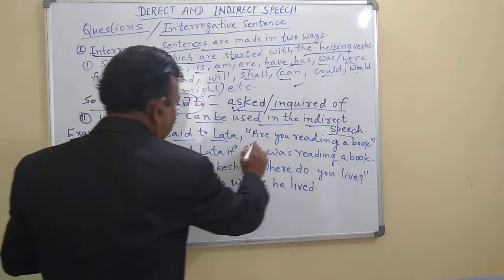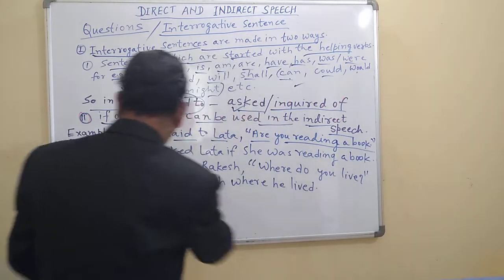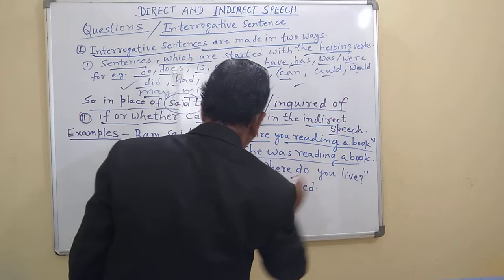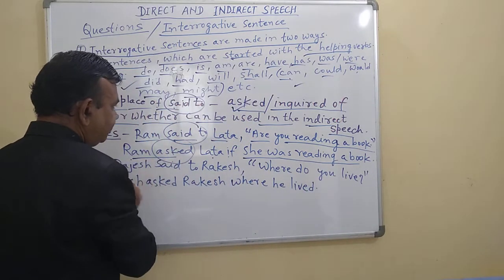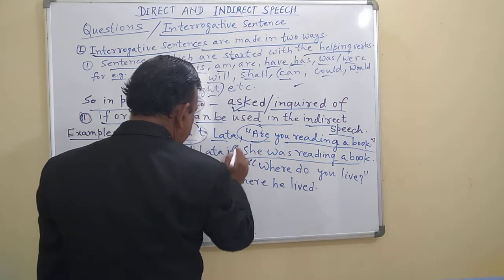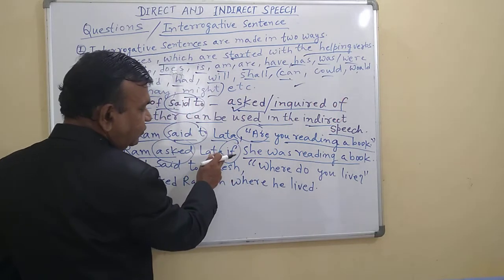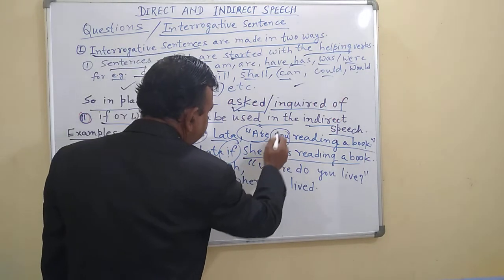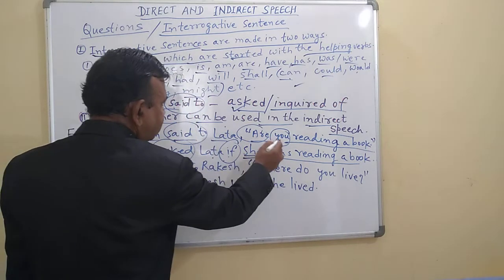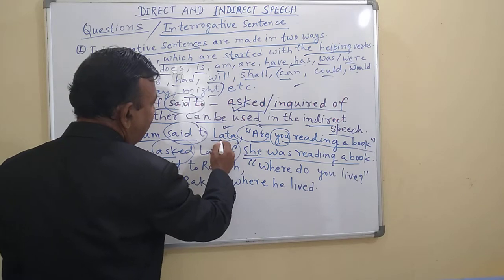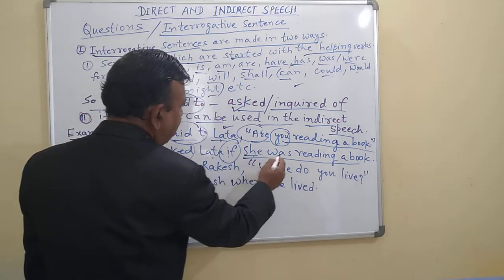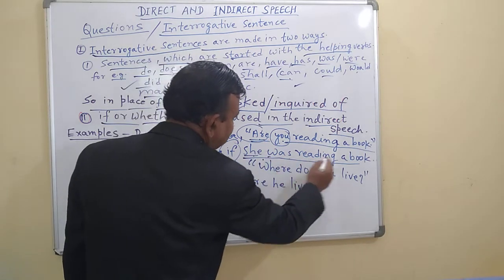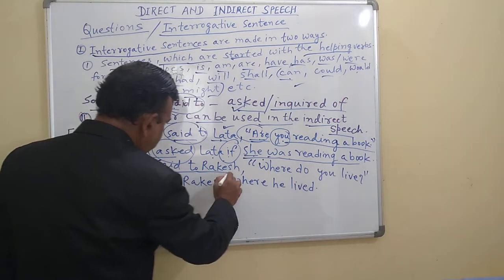For example: Ram said to Lada, 'Are you reading a book?' becomes Ram asked Lada if she was reading a book. So what we have done here: 'said to' changed into 'asked', and in place of the comma we put 'if'. In place of 'you', 'she' has come, because Lada is a girl, so the second person changes according to the object. And present continuous changed into past continuous — 'she was reading a book'.